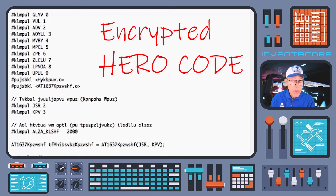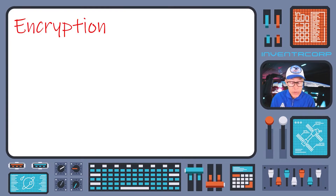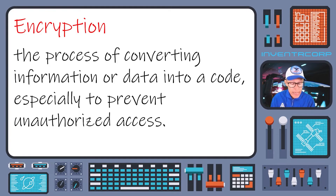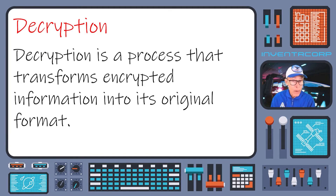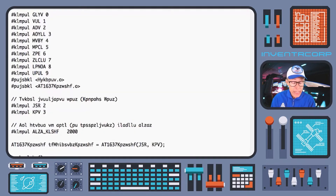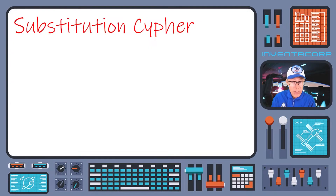The encryption technique used here is a relatively simple one. We're going to spend a little bit of time today talking about the encryption that's used and how you can go about decrypting this in order to run the code and get the necessary access information. As you might guess from looking at the code on your screen, there are some familiar-looking patterns — it looks as though the letters have been scrambled or substituted. And in fact, that's exactly what we have here: a simple substitution cipher.